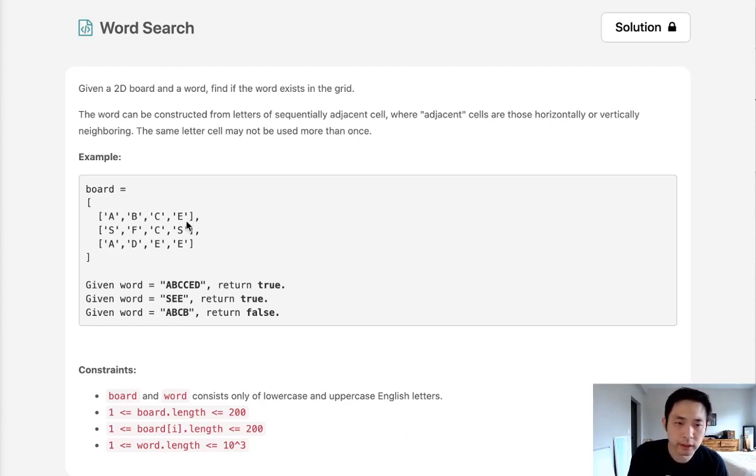When I first saw this question, I thought I'd seen this before or some variation of it. If I recall correctly, we used tries to save on some optimization, but given that we're only given one word here, I don't think it's gonna require us to create a trie.